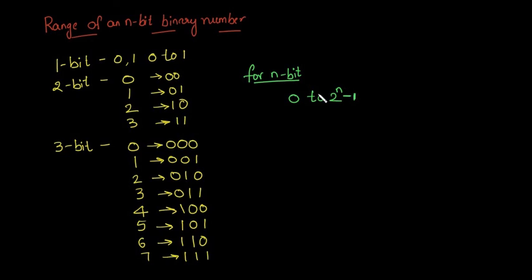If you want to check whether this is the correct range or not, we can substitute the value of 2 in place of n and check it. So let us try it. If we replace n with 2, we get 0 to 2^2 - 1.